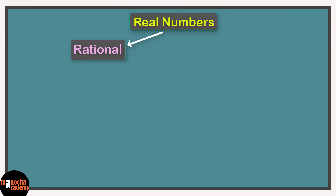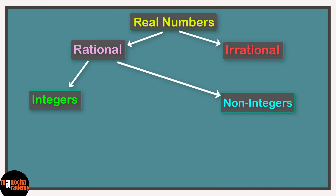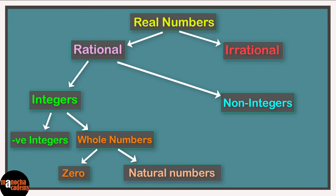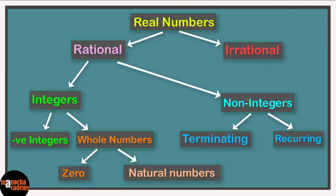We can also visualize the number system starting from the top — from real numbers. Real numbers can be divided into rational and irrational numbers. Rational numbers can be divided into integers and non-integers. Integers can be divided into negative integers and whole numbers. Whole numbers split into zero and positive integers, which are natural numbers. The non-integers — fractions and decimals — can be divided into terminating decimals and non-terminating or recurring decimals.